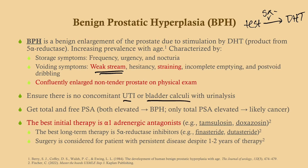Get total and free PSA. If both are elevated, that points to BPH. However, if only the total PSA is elevated, or it's elevated out of proportion to the free PSA, that likely points to cancer. Initially treat with alpha-1 antagonists such as tamsulosin or doxazosin to relieve symptoms. Long-term, use 5-alpha reductase inhibitors — by inhibiting this enzyme, you reduce DHT and shrink the prostate, though this takes time to work and is not initial therapy.